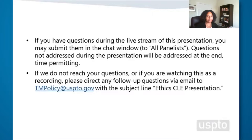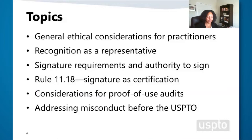There will be time for questions and answers from the presenters at the end of the session. If we do not get to your question or if you are watching a recording, please email your question to tmpolicy@USPTO.gov — that address will be posted on the last slide. Today's presentation will cover: general ethical considerations, recognition as a representative, signature requirements and authority to sign, Rule 1118 signature as certification, considerations for proof of use audits, and addressing misconduct before the USPTO.